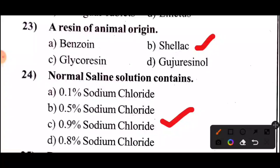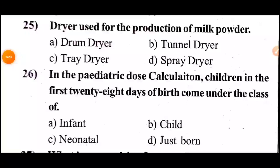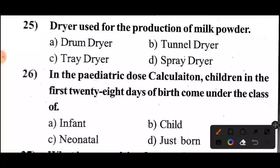Question 25: What dryers are used for the production of milk powder? The answer to question 25: dryers used for the production of milk powder — Option D, spray dryer.